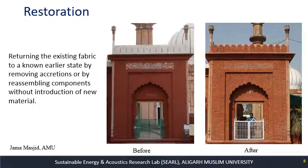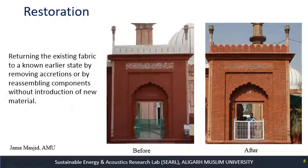The next process is restoration, which means returning the existing fabric to a known earlier state by removing accretions or reassembling components without introduction of new material. The entrance gate of that same building shows before and after images. It was an exposed brick structure to which, over the years, different coats of paint were applied. During the restoration process, all those layers of paint were removed and it is now back to the original exposed brick format.